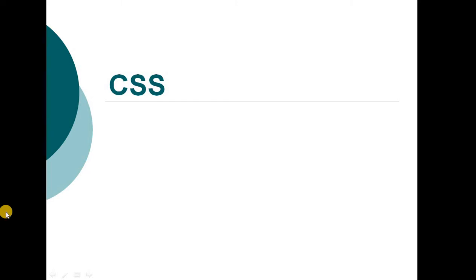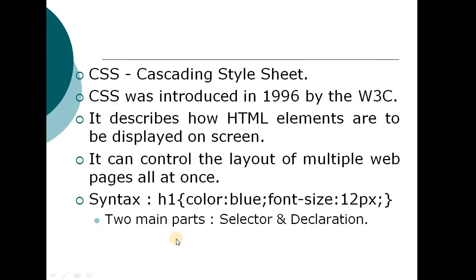Welcome, everyone. We are discussing CSS, which means Cascading Style Sheet. It is used to describe the presentation semantics, or the look and formatting of a document written in a markup language. We can also describe it as describing how HTML elements are to be displayed on the screen.